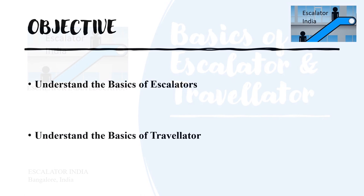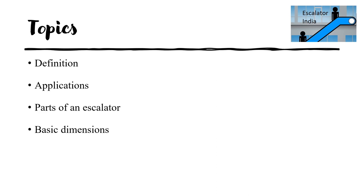The objective of making this video is to understand the basics of escalators and travelators. The topics we are going to cover here will be: definition — what is meant by escalators and travelators; application — where escalators and travelators are used and which sector they are used in; the main basic parts of escalators, meaning how many parts there are and what are the visible parts we usually see; and if you want to go deeper, we will also discuss the basic dimensions. Four topics we are going to cover in this session.